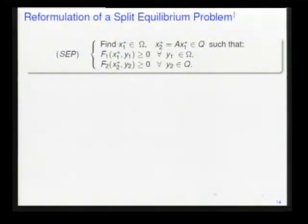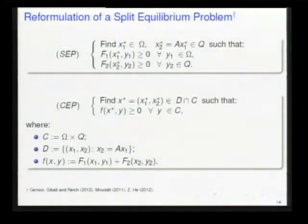Now we give our application. Here we have the split equilibrium problem. Find x_1 star in the set omega. Here we have a linear operator A, the first and second equilibrium problems. We can reformulate this problem as a constrained equilibrium problem. I take C as the Cartesian product, T in this way, and the bifunction F defined by the sum of bifunctions one and two.